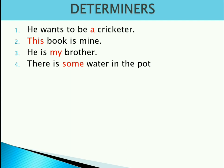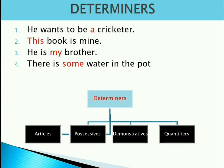So these words are called determiners. Determiners are those words which fix the position of a noun — they indicate what is going to be a noun. All these words in red are determiners.